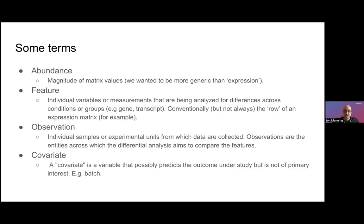By observation we're talking about the individual samples or experimental units, and by covariates we're talking about a variable that possibly predicts the outcome under study but it's not of the primary interest. For example, batch is one that comes up quite often in expression data.